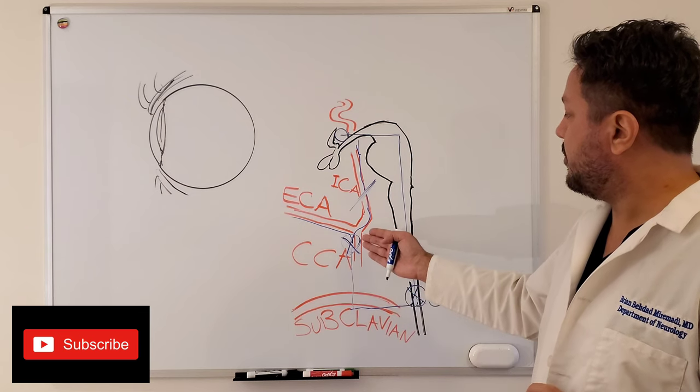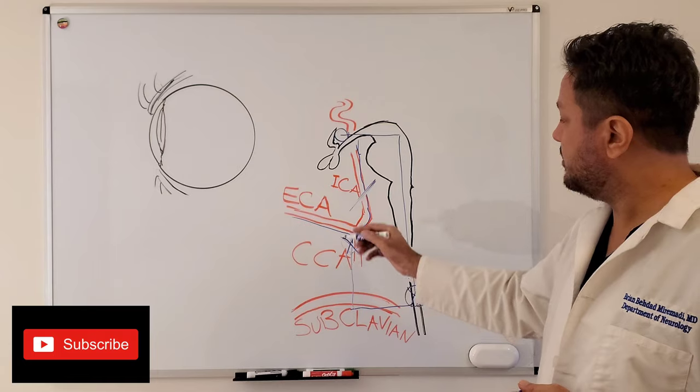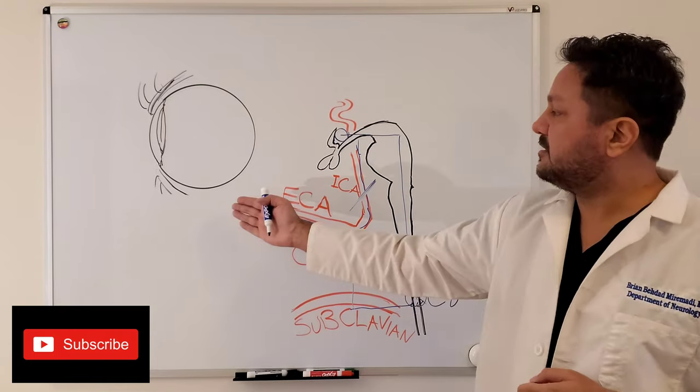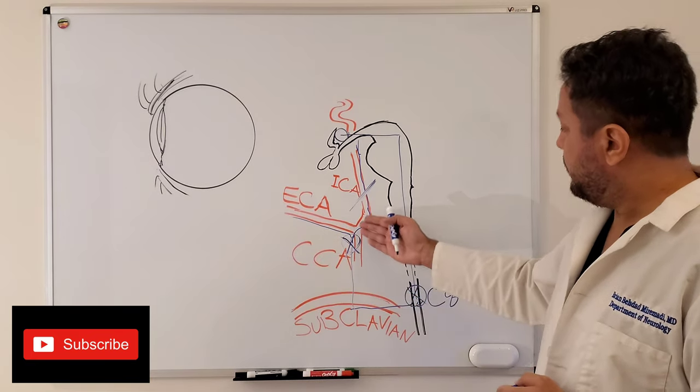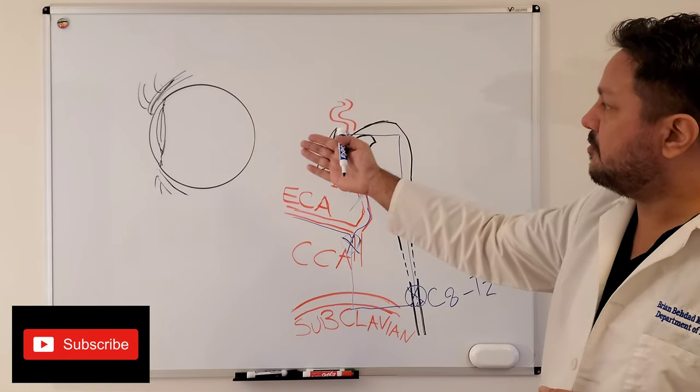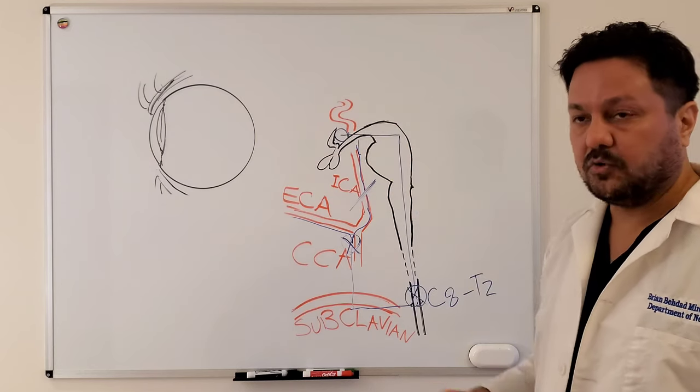And then eventually we will have the branches that can cause anhidrosis if affected proximally, and the branches that can cause miosis and ptosis of the eye and the orbit.